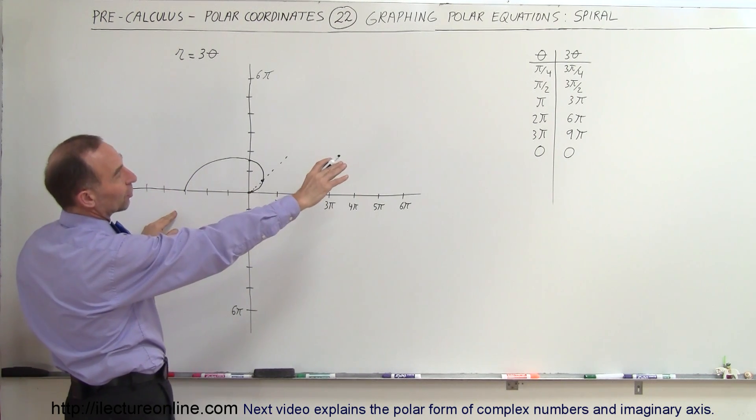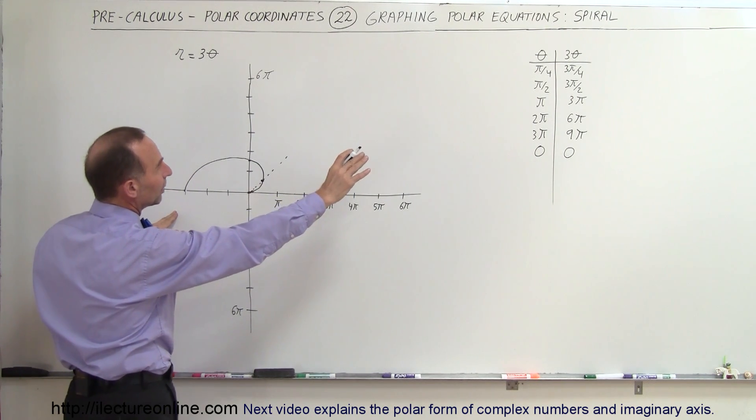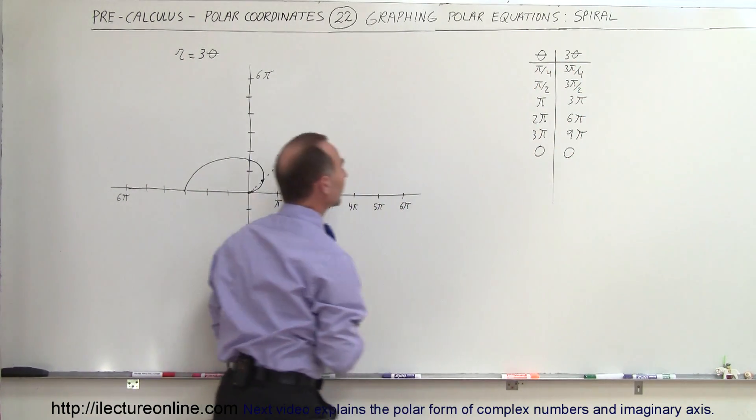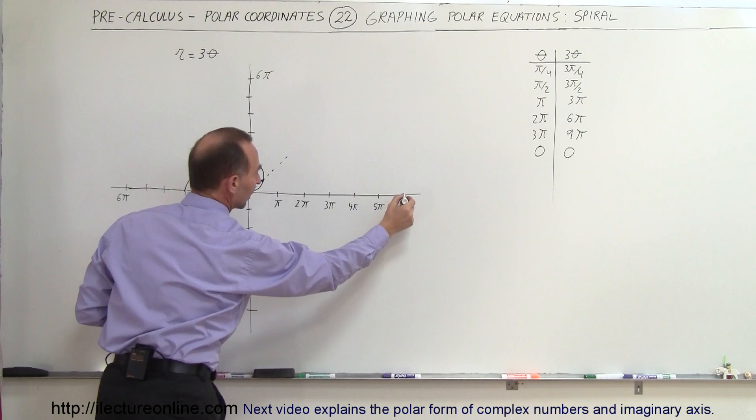Okay, continue on. So when theta is equal to 2π, 3 theta, which is r, will be equal to 6π, which is way over here right there.